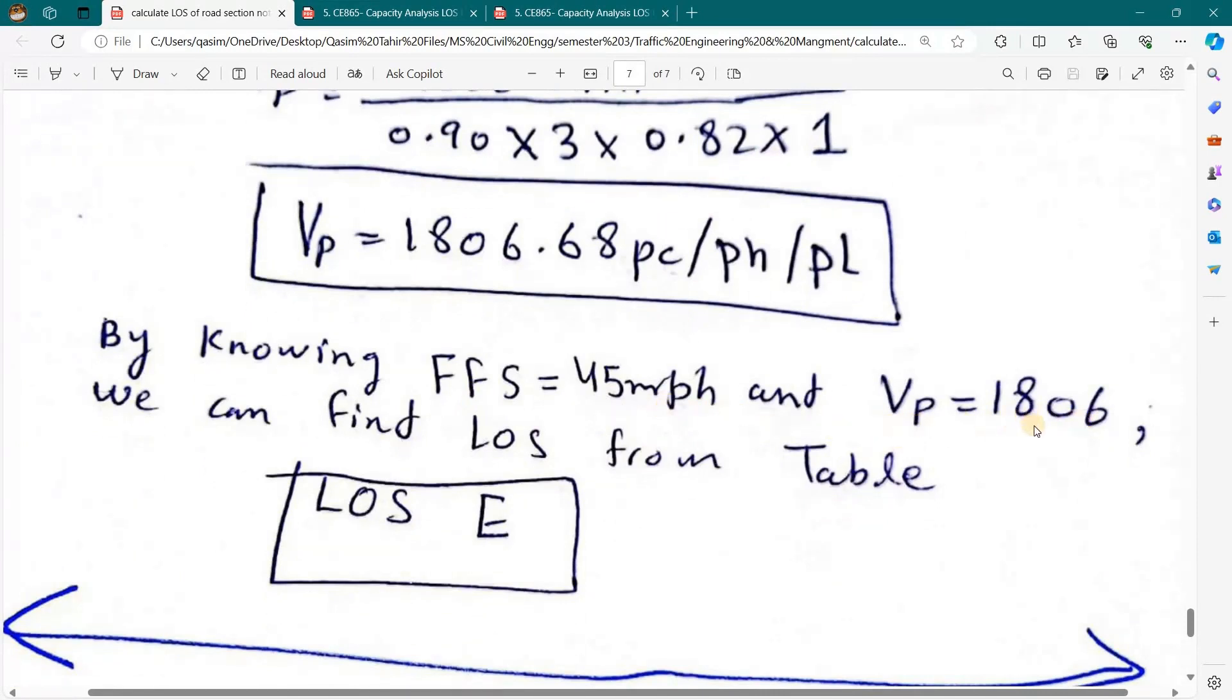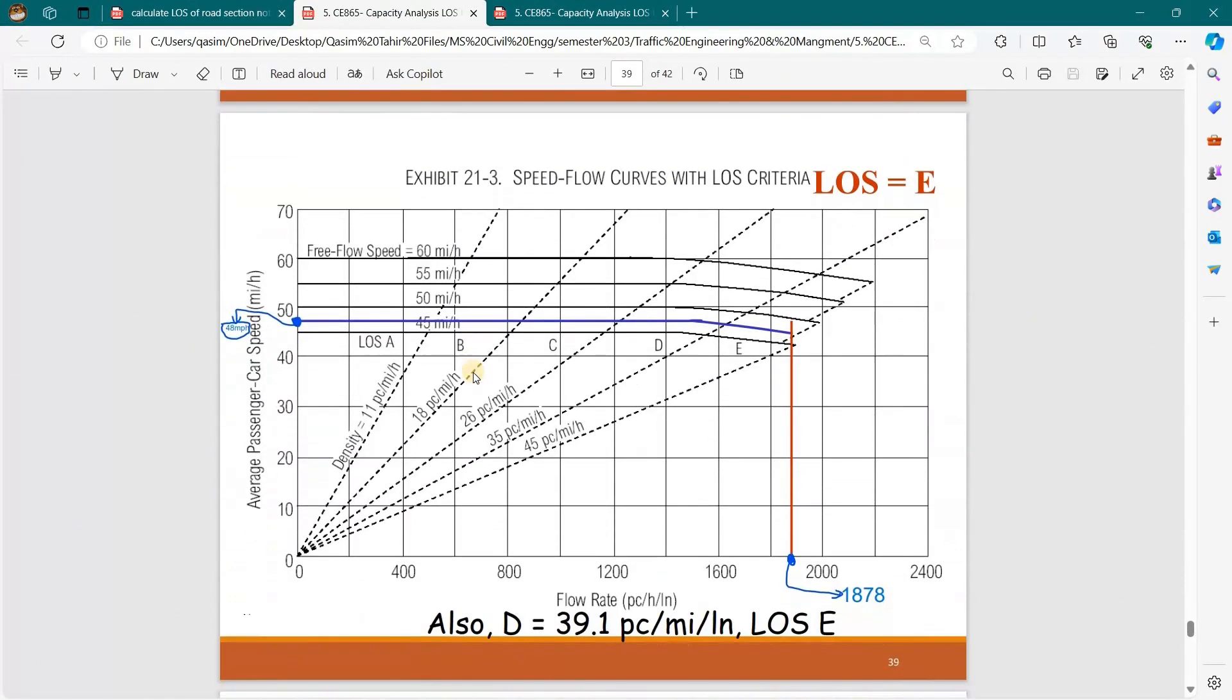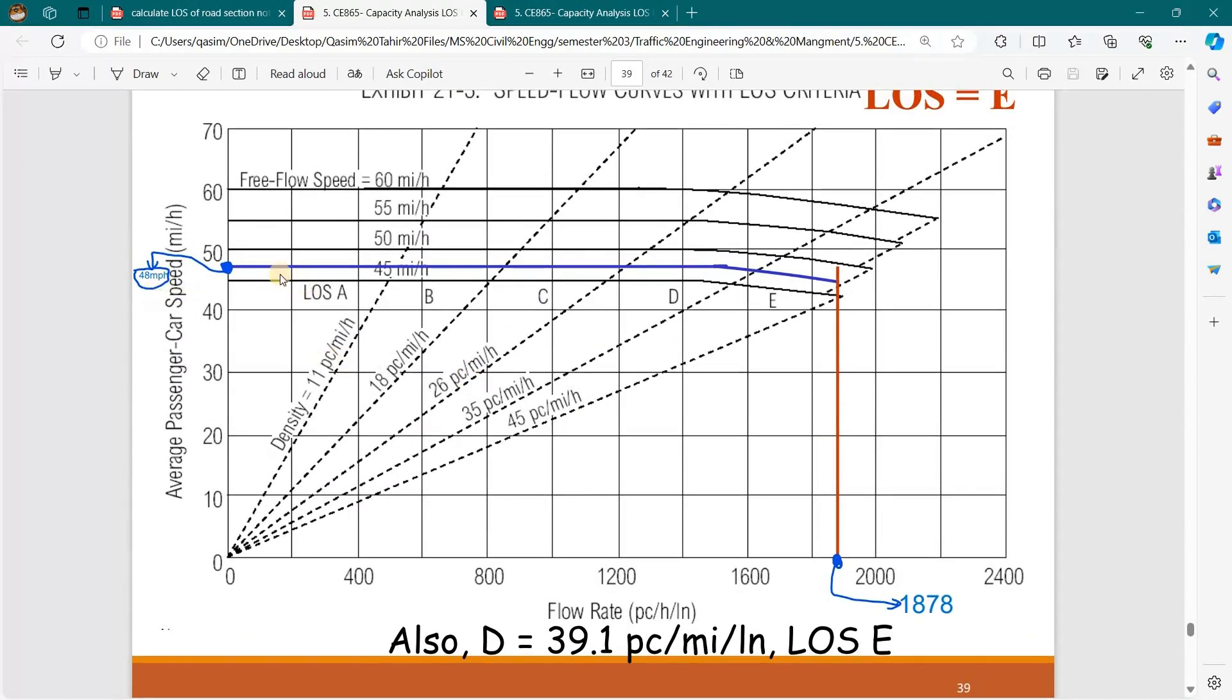Now by using free-flow speed of 45 mph and Vp equal to 1806, we can find level of service. Here we have a graph. We have a free-flow speed of 45 mph, this is the 45 line, and we have a volume of 1806. It is like here, somewhere here.